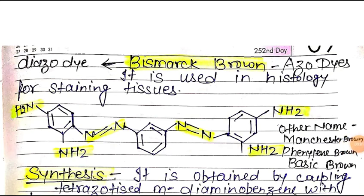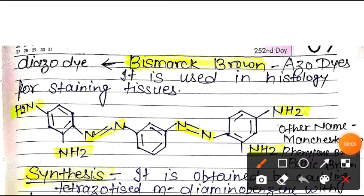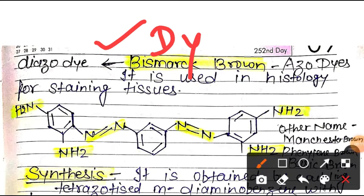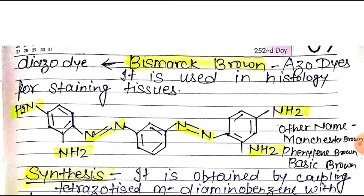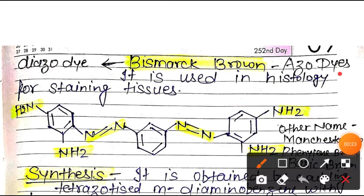Hello everyone. In this video we will discuss about the azure dyes. In the previous video, we have discussed the dyes definition and classification. Dyes are the compounds which produce the color in various substances. Today we will discuss about the Bismarck brown. This is an example of an azure dye.